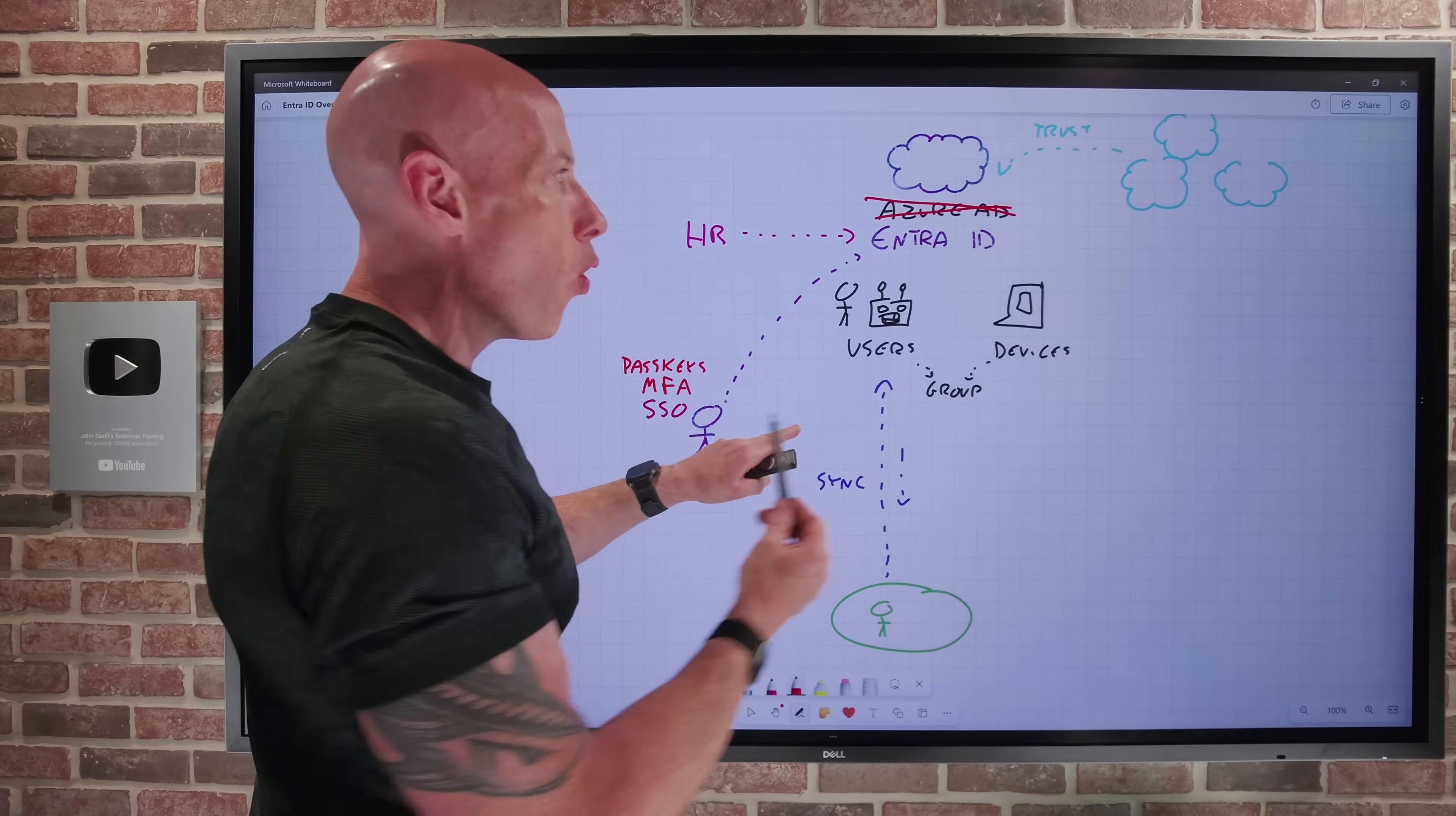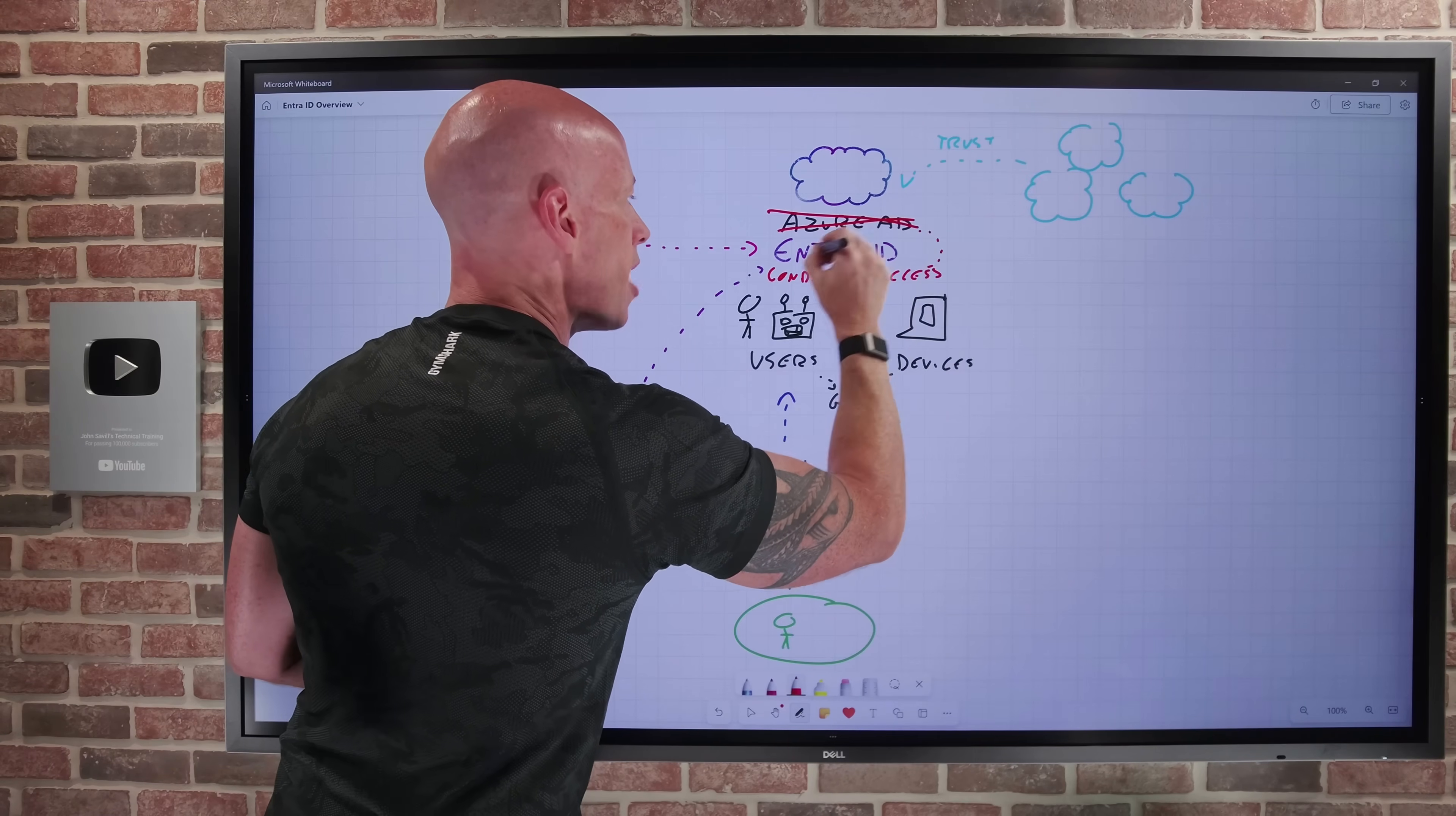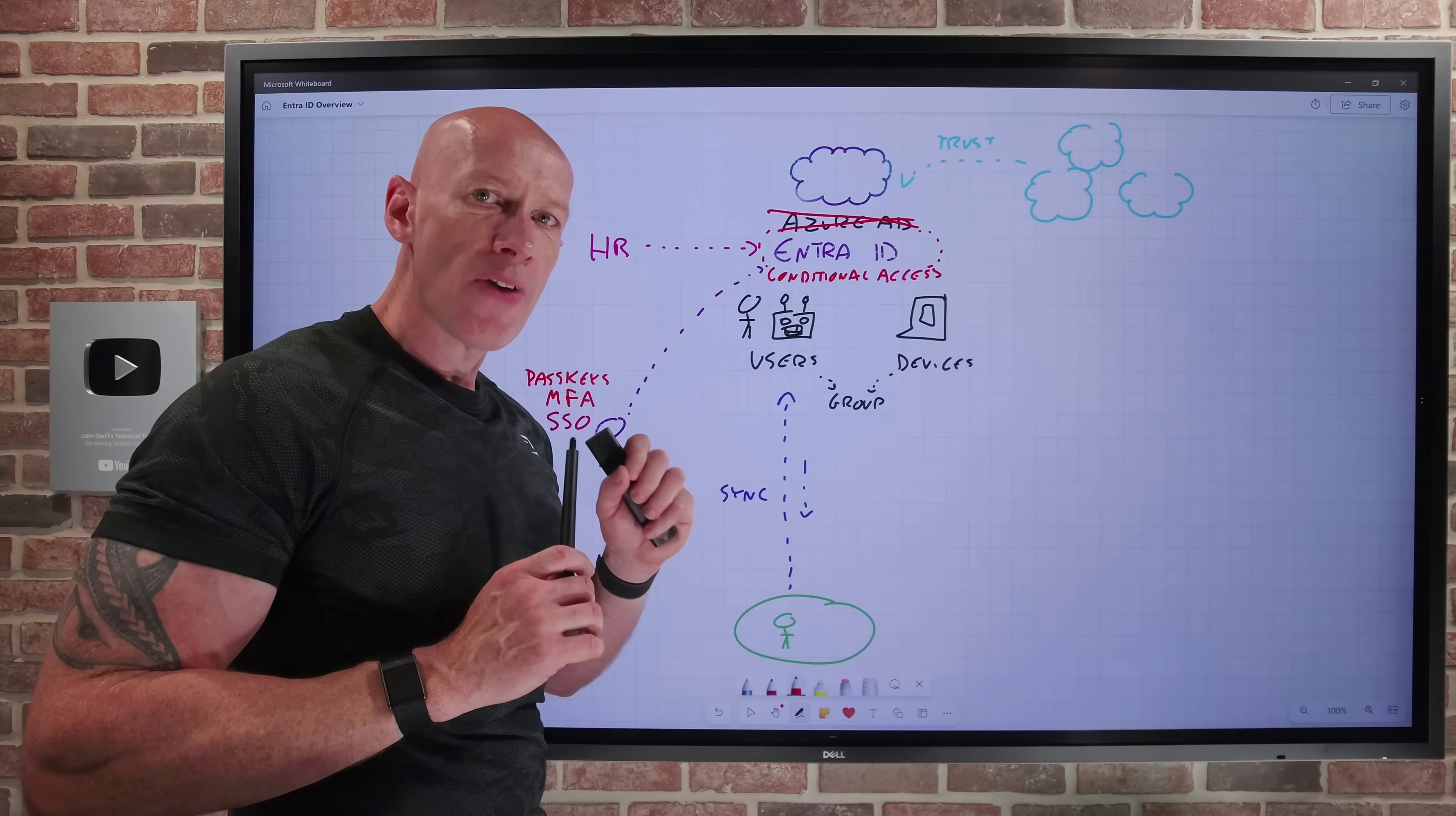And then around all of these different integrations, all of these fantastic things is really a superpower. We call it conditional access. But think of this as this barrier around anything I'm trying to be authorized, i.e. I have a certain permission to do actions on that thing. Conditional access will protect anything that is integrated with Entra.